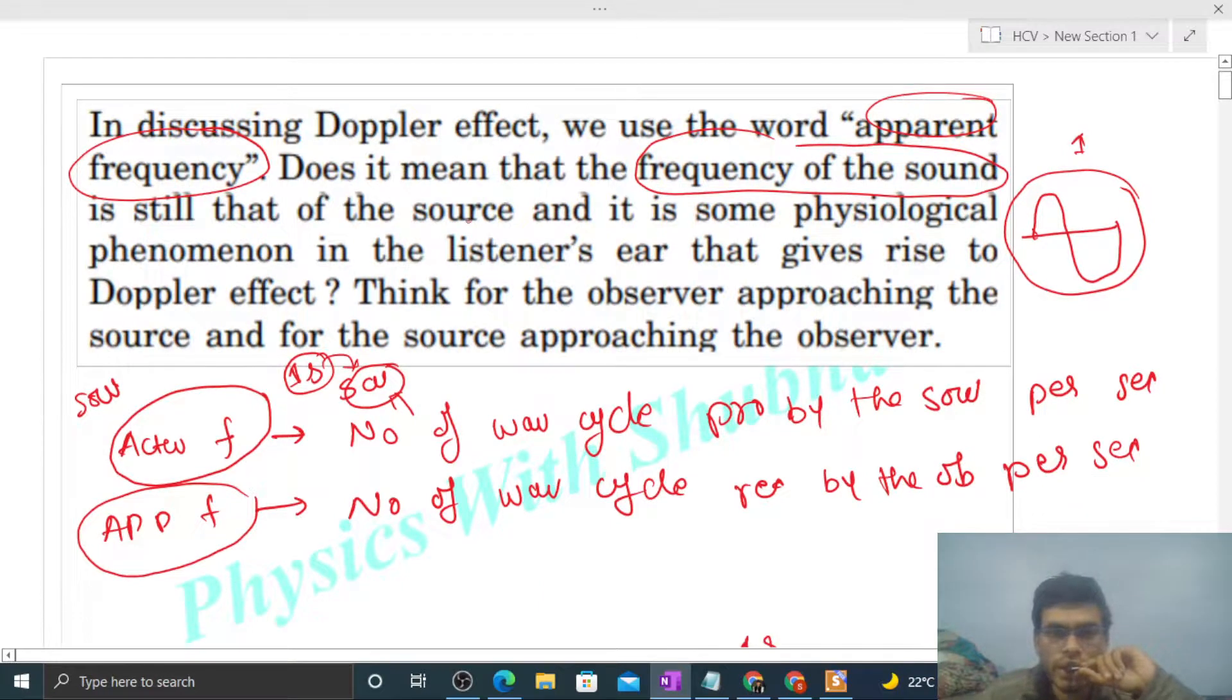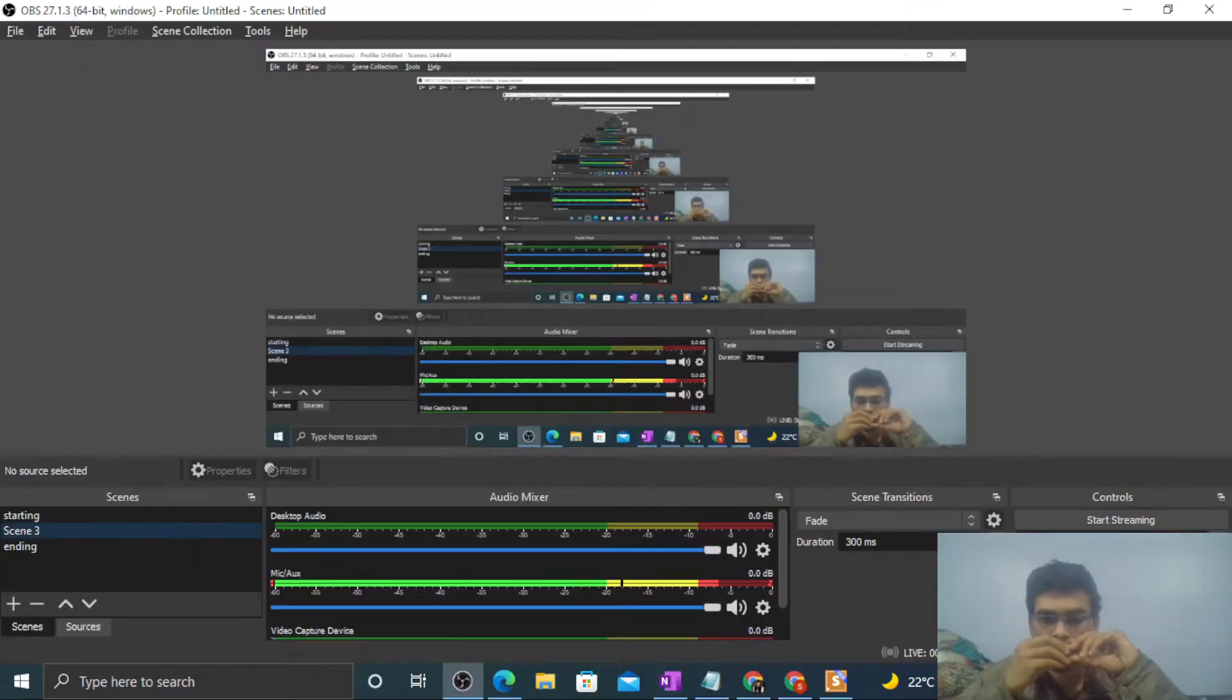So let's check the question. Does it mean that the frequency of the sound is still that of the source? Of course, this statement is correct. And is it some psychological phenomenon? No, it is not any psychological phenomenon, rather it is because of the relative motion between the source and the observer. I think you have understood. Let me know if you still have any confusion. Keep working hard, best of luck.